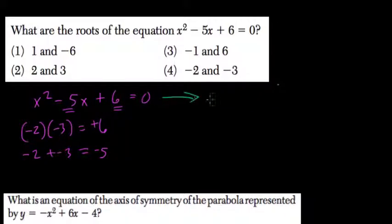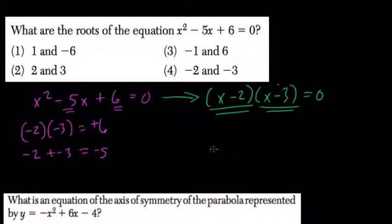So if this is true, then we can factor it into x minus 2 times x minus 3. That will equal 0, so this number or this number or both equals 0.